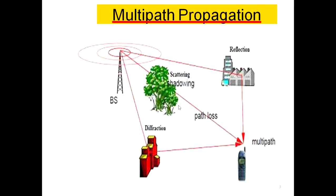Since the single signal from a single transmitter to a single receiver takes multiple paths, it results in path loss. Depending upon the path taken by the signal and the number and nature of obstacles, the path loss will vary.